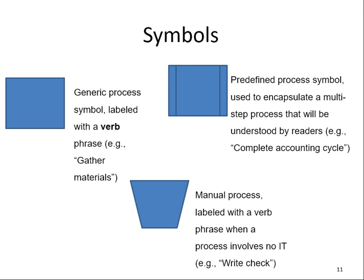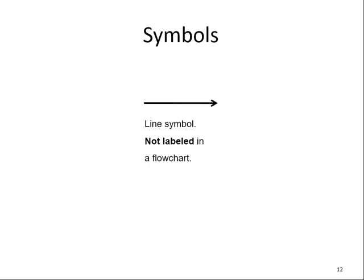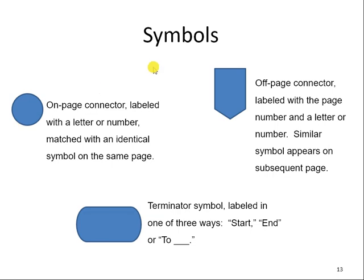Here we have some introduction of the symbols — you can take a look. We do have line symbols which show the flow of a document, how documents flow from one process to the other. These lines are not labeled. We also have special ones like on-page connectors, to keep the document flowchart concise. We may use these on-page connectors to show connections; otherwise, lines would cross each other and look very messy. We also have off-page connectors, which show the connection when you have too many columns.